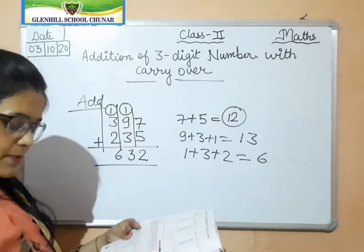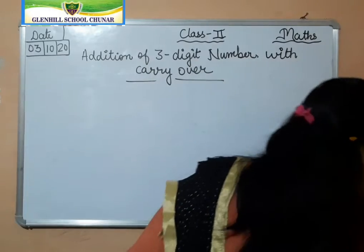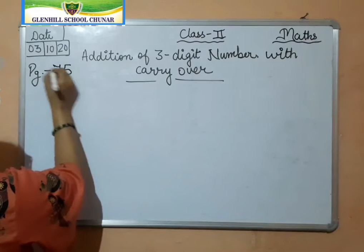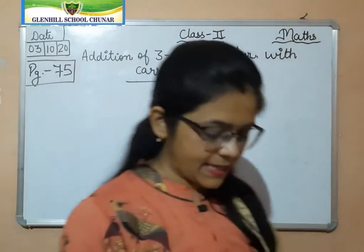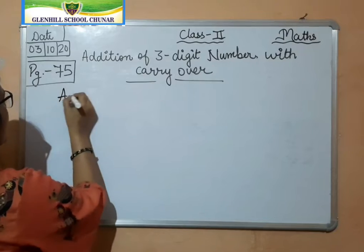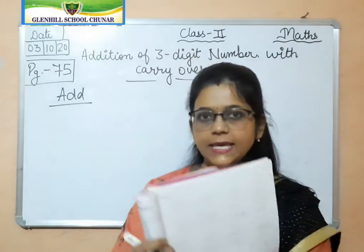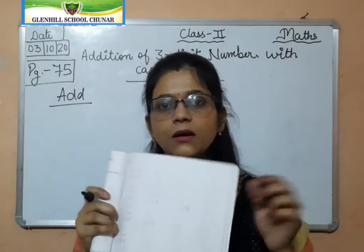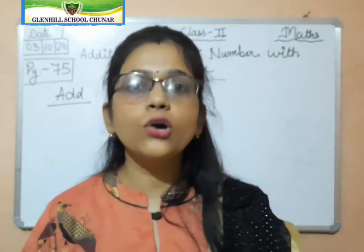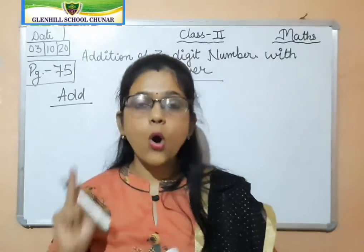Now turn to page number 75. Open page number 75, everyone. There are so many questions on page number 75. I am selecting some questions and writing them on the whiteboard. These questions you have to note down in your copy, and after that you are going to add all the numbers in your book by yourself.